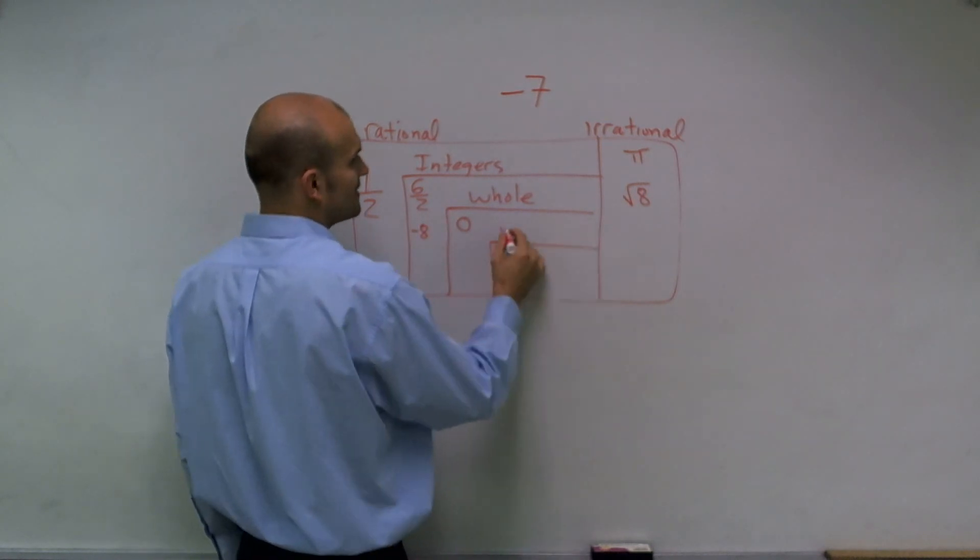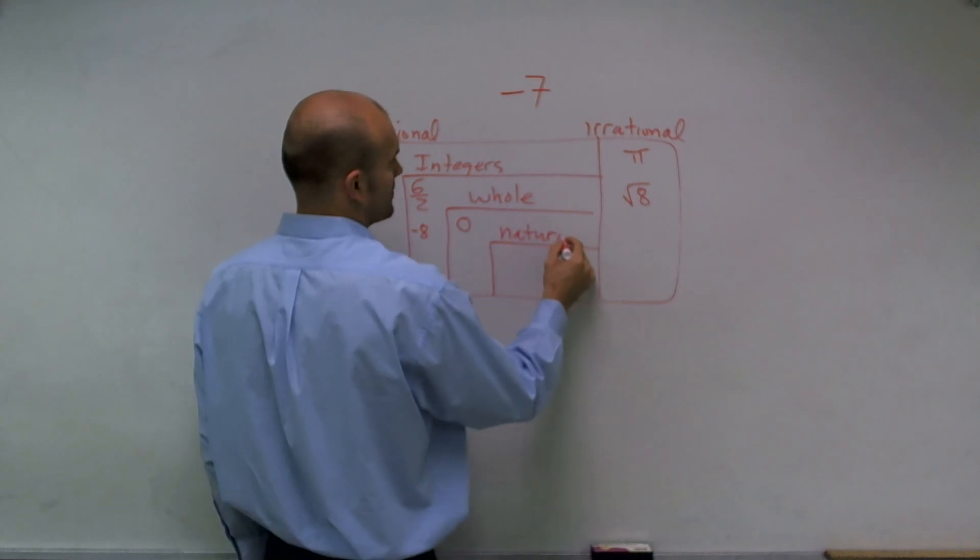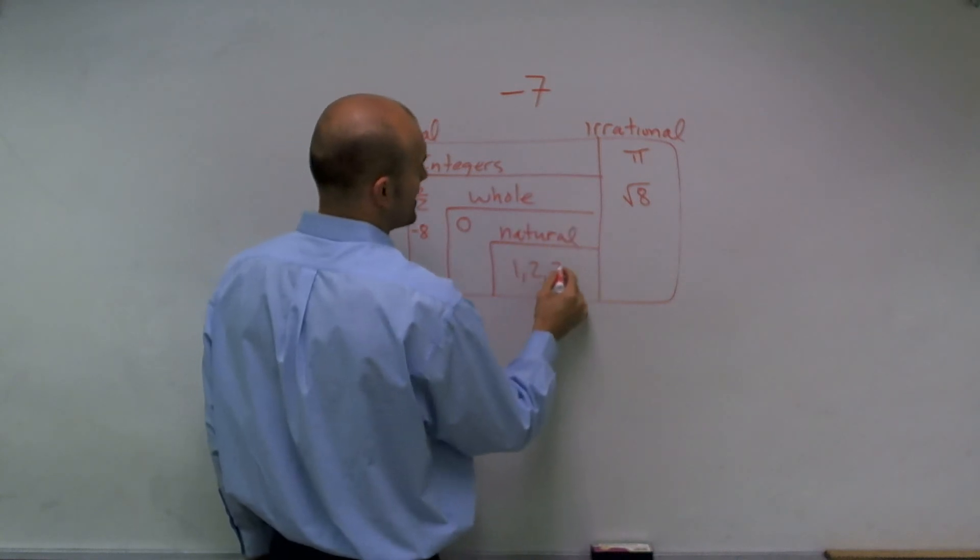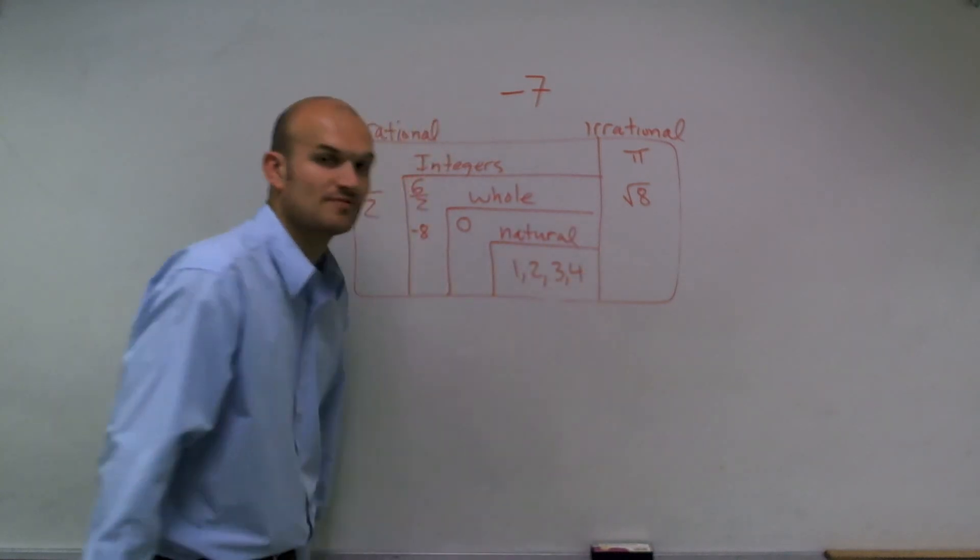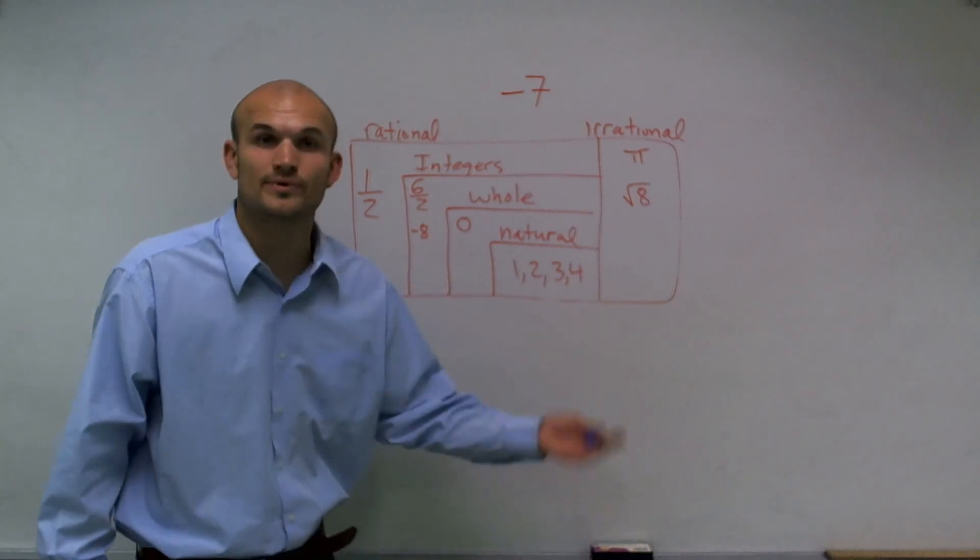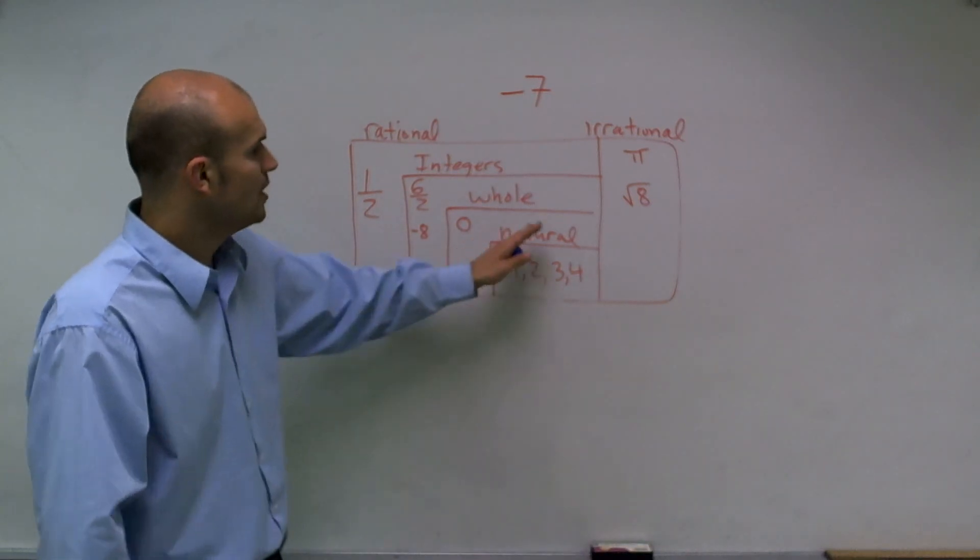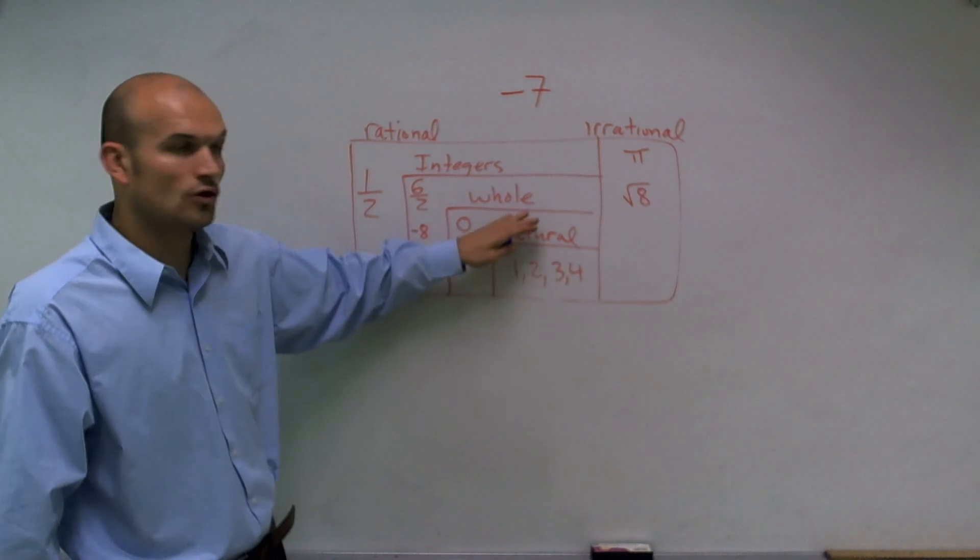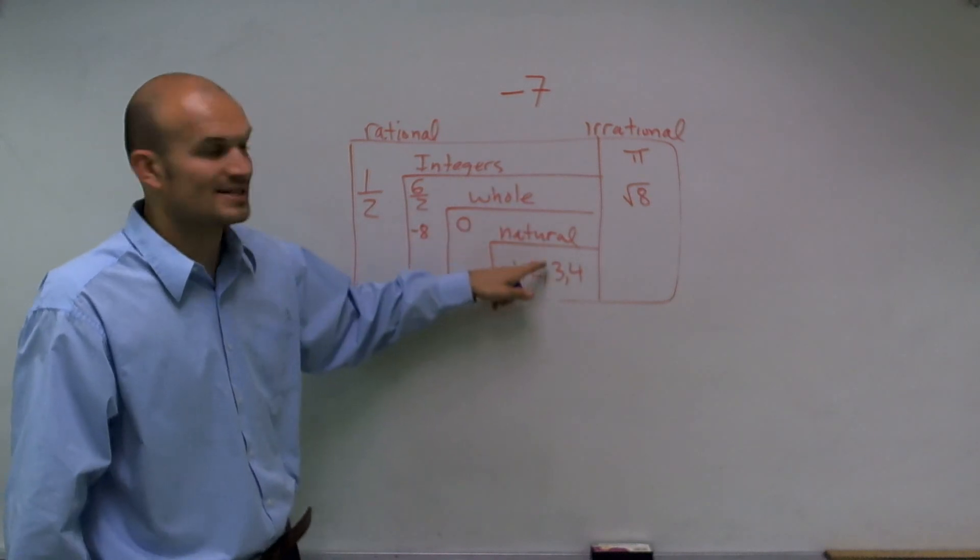But then we have natural numbers. And those are your numbers that everybody is very most familiar with. So it's like the 1, 2, 3, 4, 5, 6, 7, 8. Natural numbers are whole numbers. But you've got to notice that 0 is not a natural number.